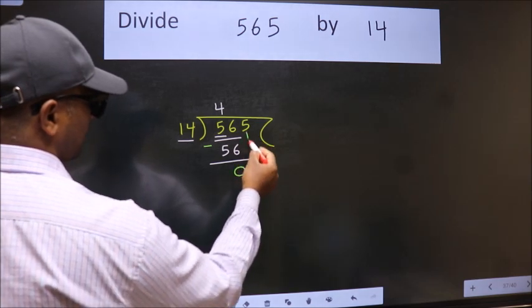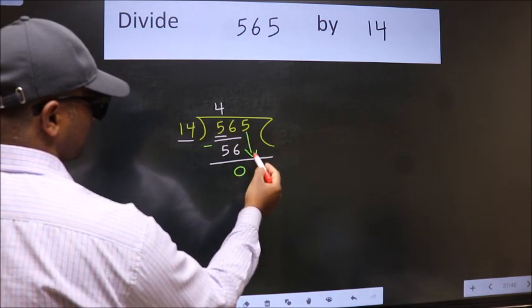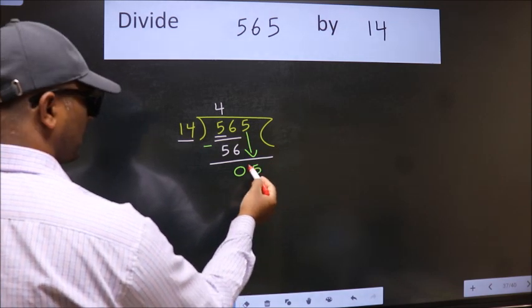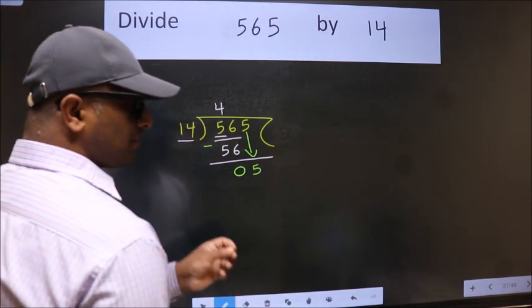After this, bring down the beside number, so 5 down. After this step, the mistake happens.